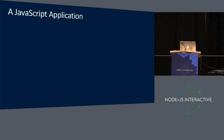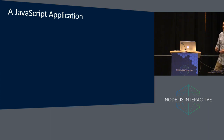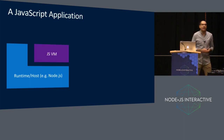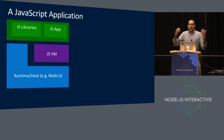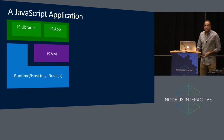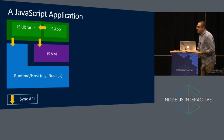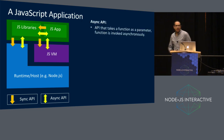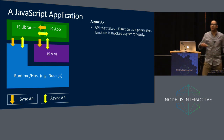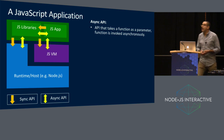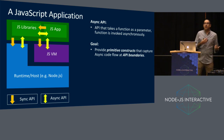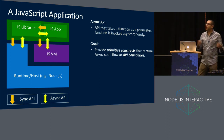Let's talk about the concepts. At the basic level, you've got some hosts — for example, Node.js or the browser. The host embeds a JavaScript VM. On top of that, you have some JavaScript code — either modules downloaded through NPM or something the user is typing. These things communicate through APIs, sometimes synchronous, sometimes asynchronous. An async API is really an API that takes a function as a parameter and that function is invoked asynchronously at some point later in time. Our goal is to give some primitive constructs at the VM level that let us capture async code flow at the API boundary.